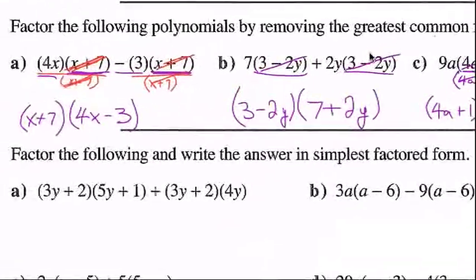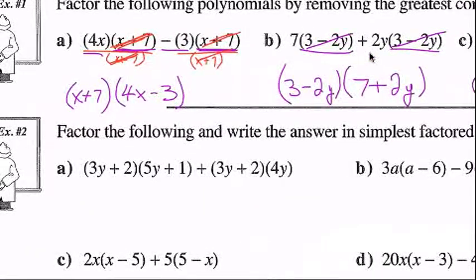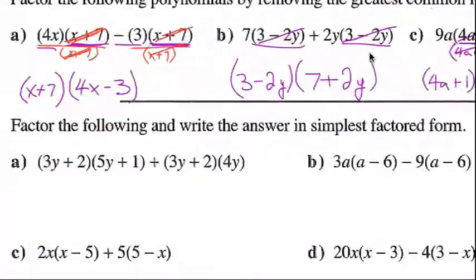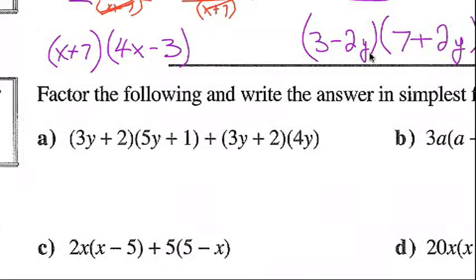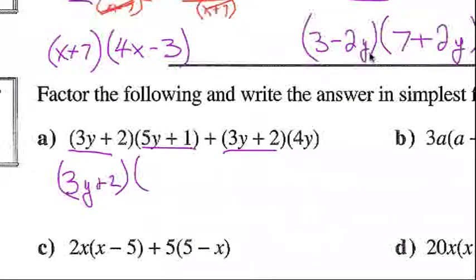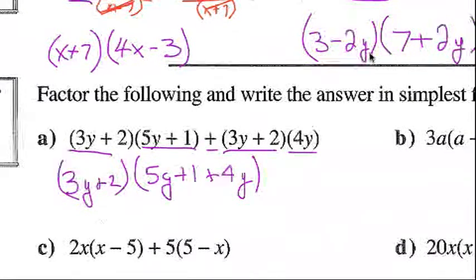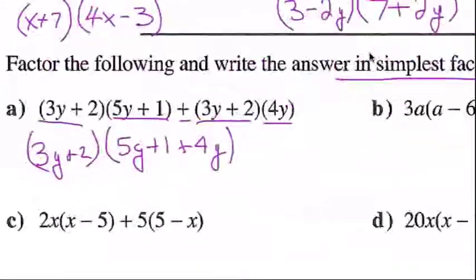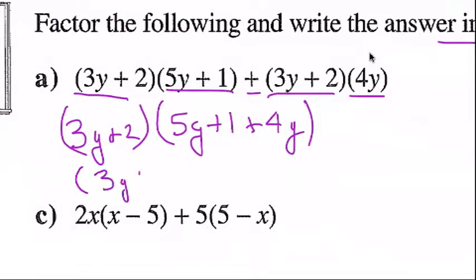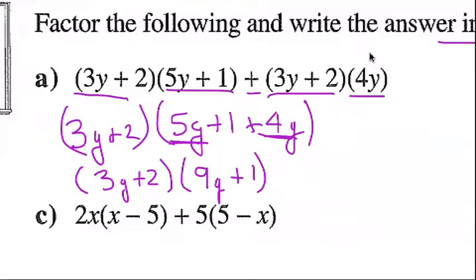Example two a: factor and write your answer in simplest factored form. We have (3y + 2)(5y + 1) + (3y + 2)(4y). You can see (3y + 2) is common between both terms, so that's my factor. I'm left with (5y + 1 + 4y). The hint 'simplest factored form' means there may be a last step: 5y and 4y are like terms, combining to give 9y + 1. So the answer is (3y + 2)(9y + 1).